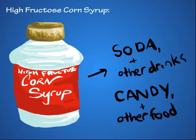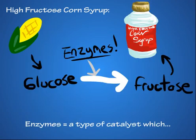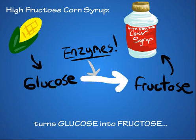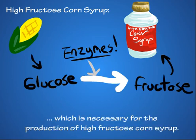High fructose corn syrup is a sweet syrup found in many foods and drinks. It requires enzymes, which are a type of catalyst, to change glucose into fructose, which is an important step in the creation of high fructose corn syrup.